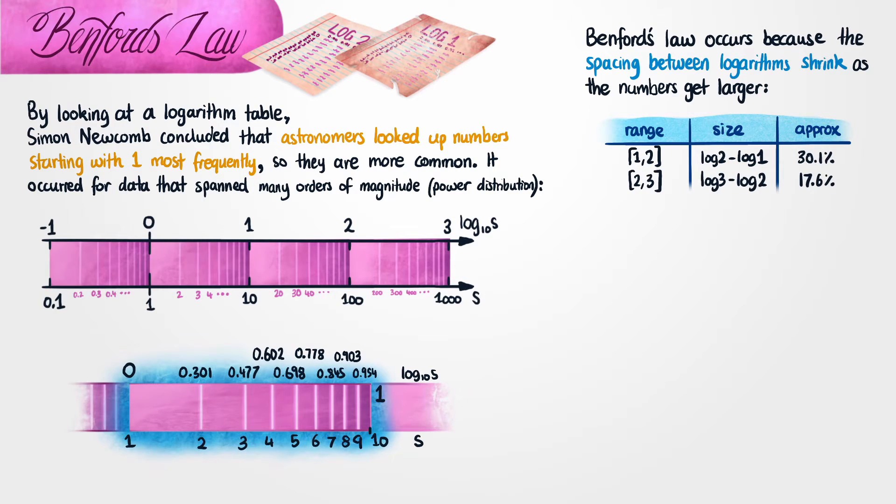If we then did the same thing for the range between 2 and 3, we could calculate this size by taking the log of 3 and then subtracting the log of 2. So this is the log of 3 and this is the log of 2, and this is approximately equal to 17.6%. So this means that 30% of the time, your darts are going to land between 1 and 2, and 17.6% of the time, your darts will land between 2 and 3. Or to bring this back to the astronomical example, the radius of different astronomical objects will begin with the number 1 30% of the time, and begin with the number 2 17% of the time.